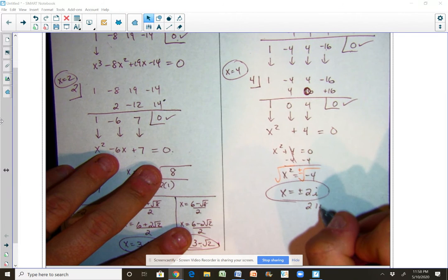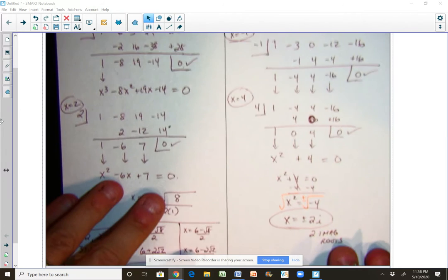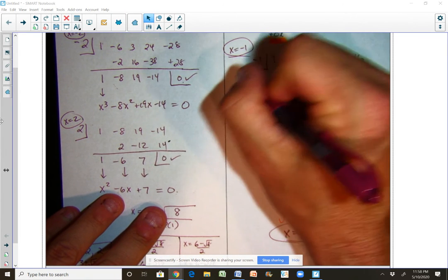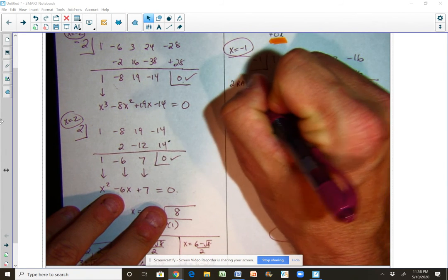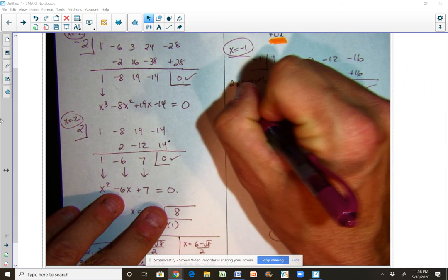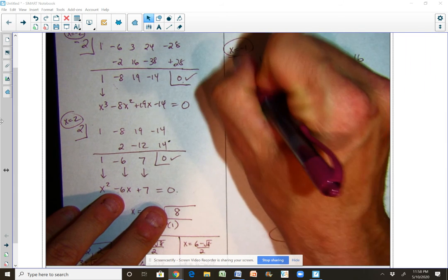So here we have two imaginary roots. We get plus and minus 2i. And then above we have our two rational roots. Two rational roots. And those are the ones that we use the graphs on right there.